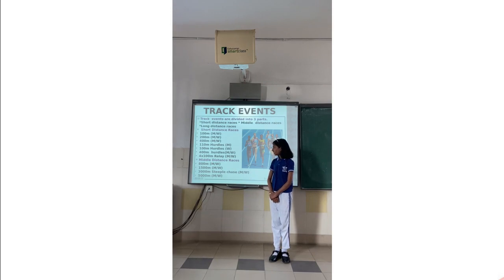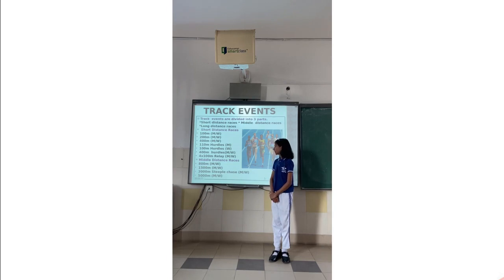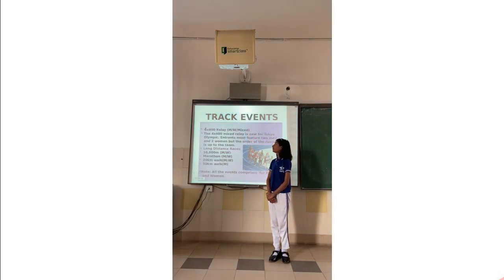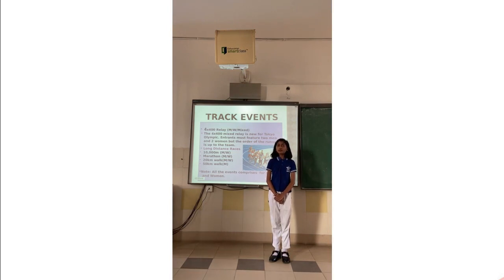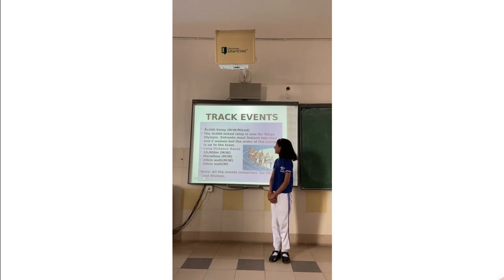Middle distance race events are 800m, 1500m, 3000m Steeplechase, 5000m, and 4x400m Mixed Relay. The 4x400m Mixed Relay is a new part of the Olympics, and the team must feature both men and women, but the order of runners is up to the team.